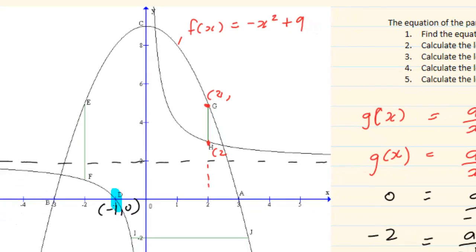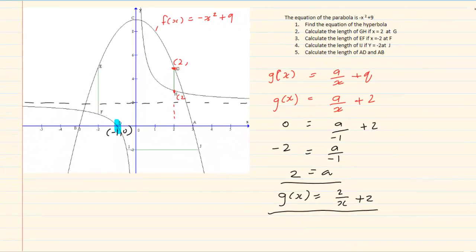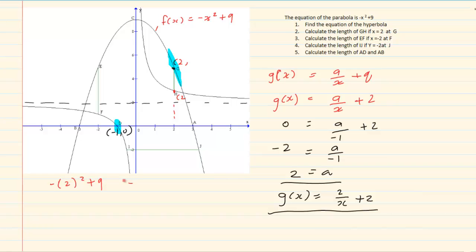How do we calculate the y? To calculate the y-values we simply substitute 2 into the graph it is touching. At g it is touching the parabola, so I am going to have minus 2 squared plus 9, which gives us 5. For h, I know it is on the hyperbola graph, so we have 2 over 2 plus 2 which is equal to 3. So the coordinate here is 3.